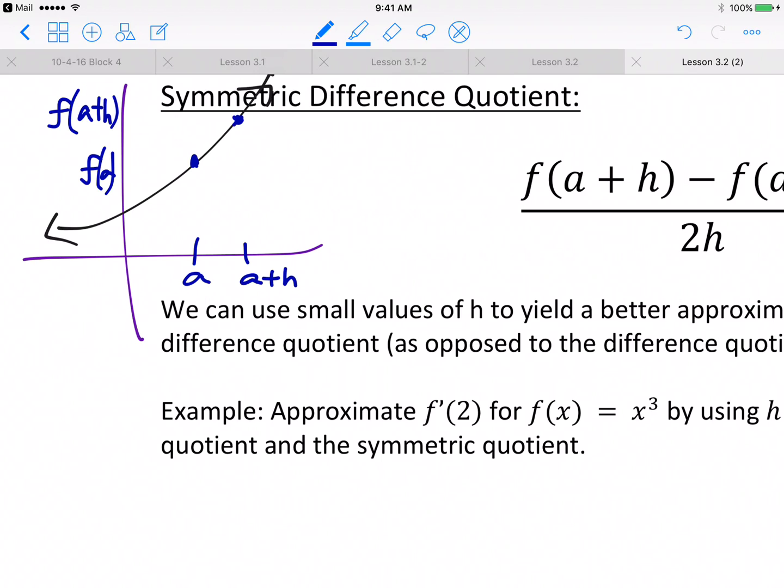And the slope between these two points is simply f of a plus h minus f of a all over a plus h minus a. And then therefore the a's cancel out, and then you have h right there.